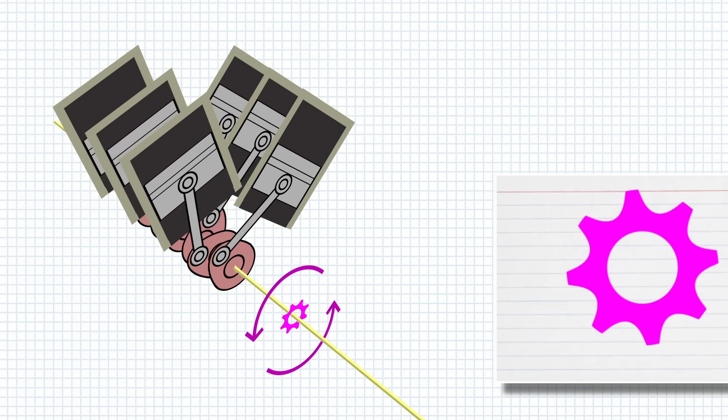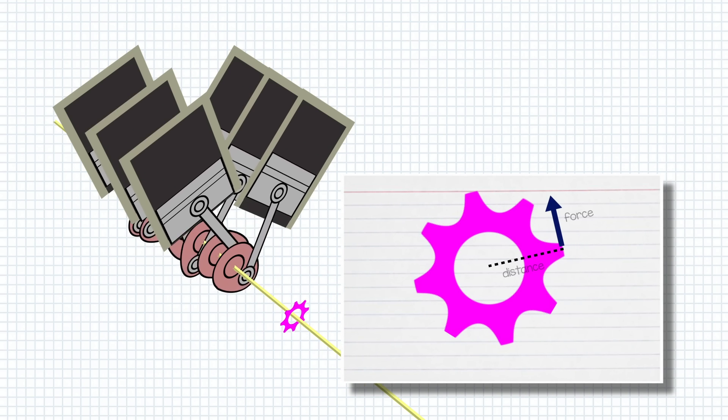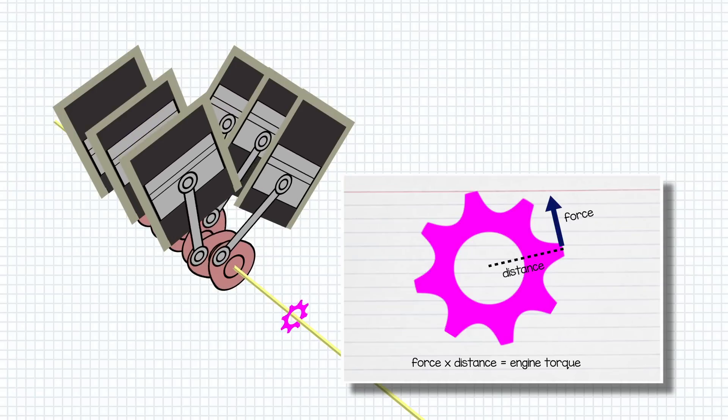If we stick a gear cog on the end of the crankshaft we can measure the force the gear pushes with at its circumference to work out how much torque the engine is delivering to the crankshaft at any given time. Now this torque, the turning force measured at the crankshaft, is the engine torque we talk about when describing the torque of the engine.